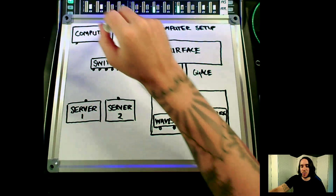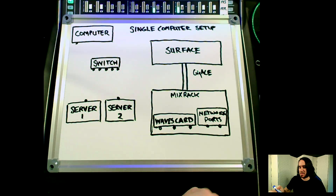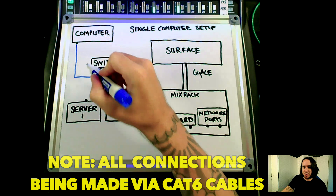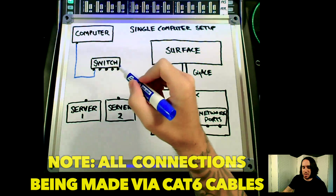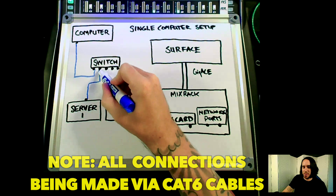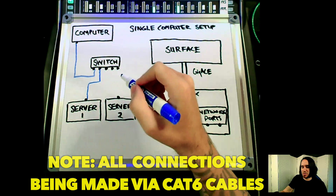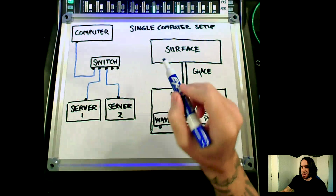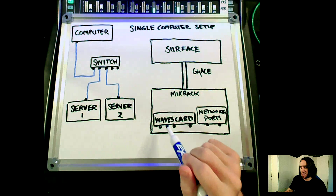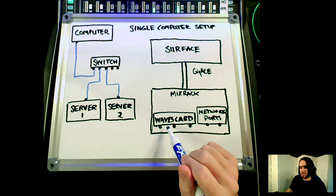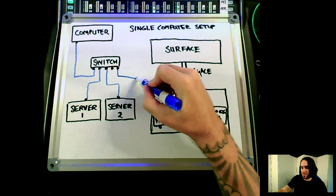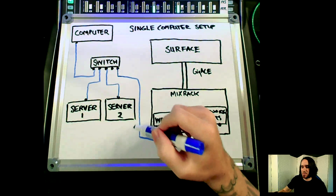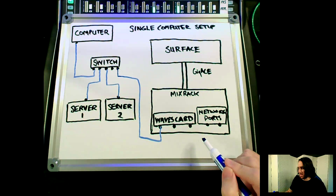Building the Waves network is as simple as this: your computer goes to one port on your switch, server 1 goes to another port on your switch, server 2 goes to another port on your switch, and then we're going to take one of the Waves card sockets and hook it to the switch. Now we have built our Waves network.